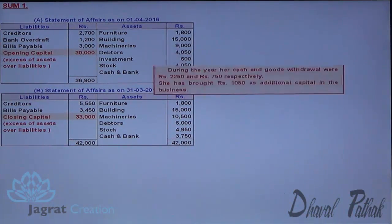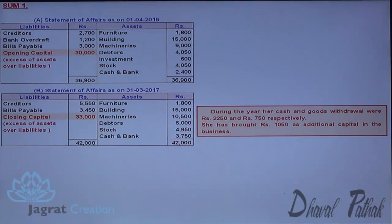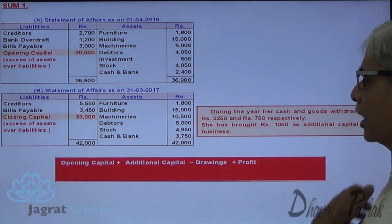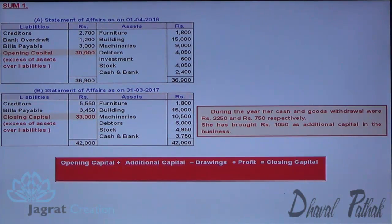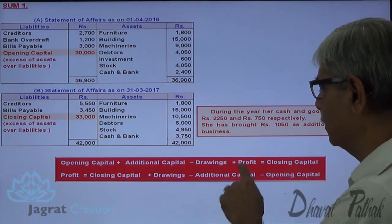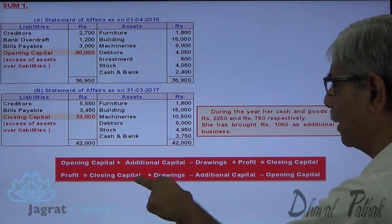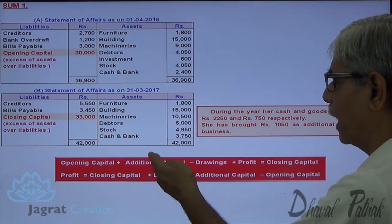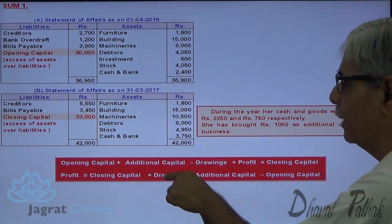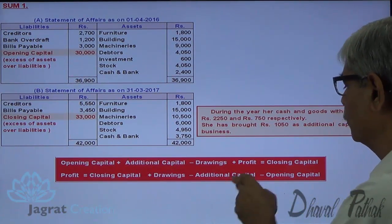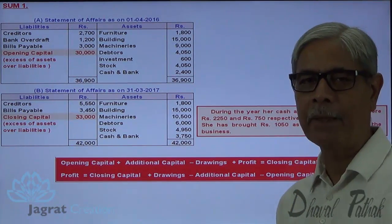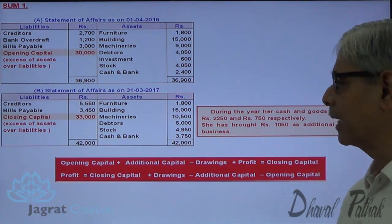Now, the formula is: opening capital plus additional capital minus drawings plus profit equals closing capital. Making profit the subject of the equation, I keep profit on one side and transfer closing capital to the opposite side. Opening capital, additional capital, and drawings are transferred to the opposite side, so minus drawings becomes plus drawings, and additional capital and opening capital are deducted. Therefore the formula is: Profit = Closing Capital + Drawings − Additional Capital − Opening Capital.